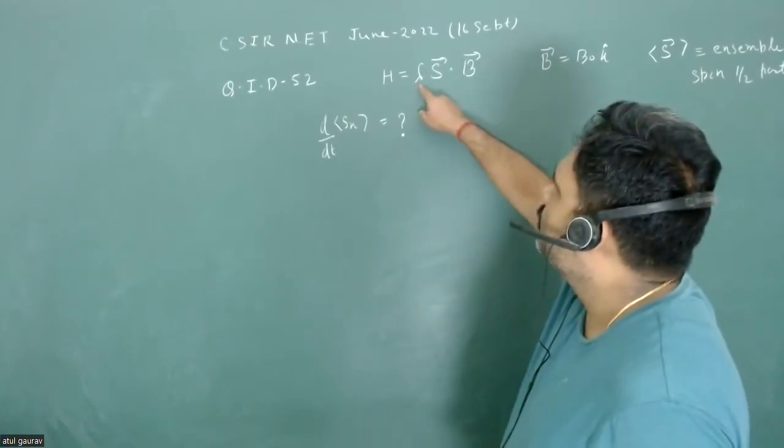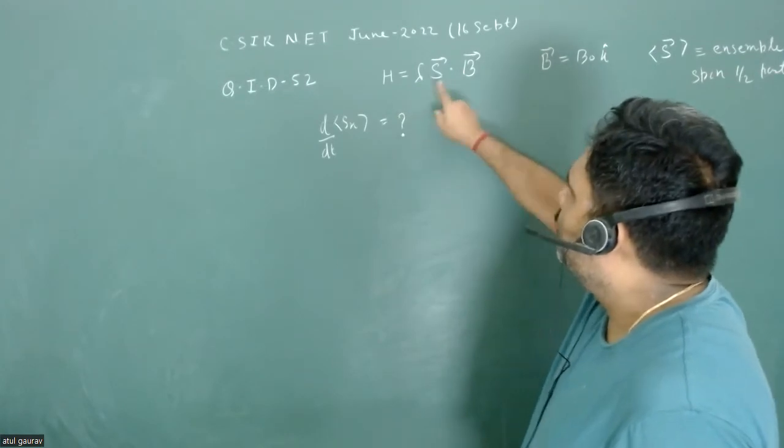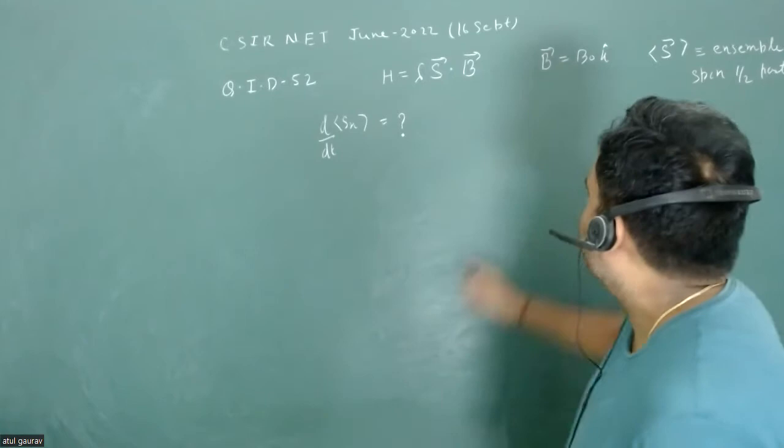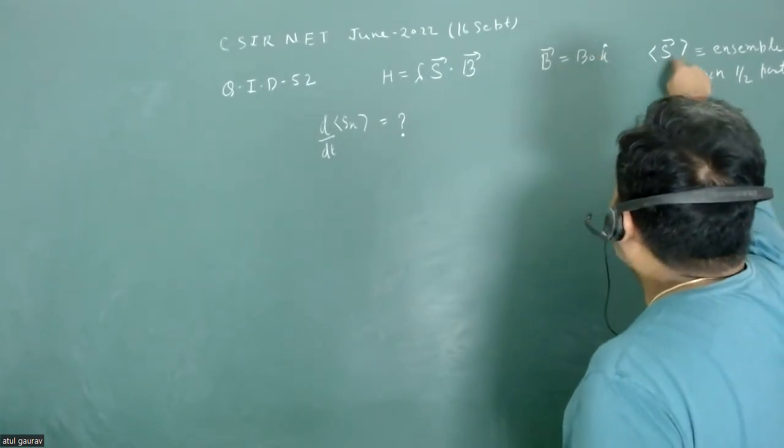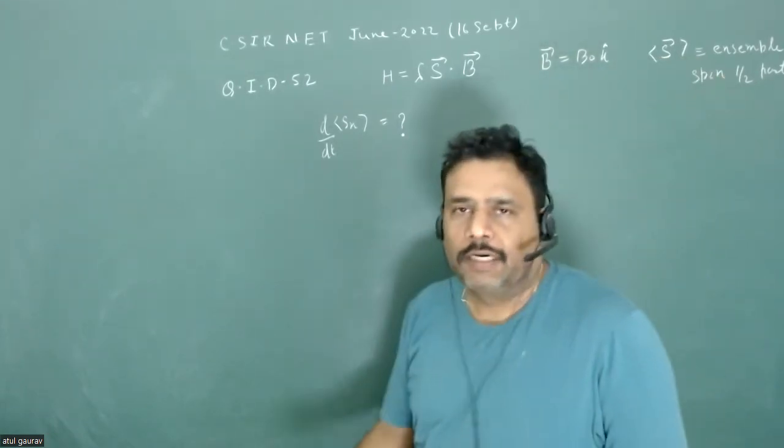We have Hamiltonian which is lambda s dot b, where b is some magnetic field, and s is the spin angular momentum for spin half particle. And b is in the k cap direction. And expectation value of s is the ensemble of spin half particles.